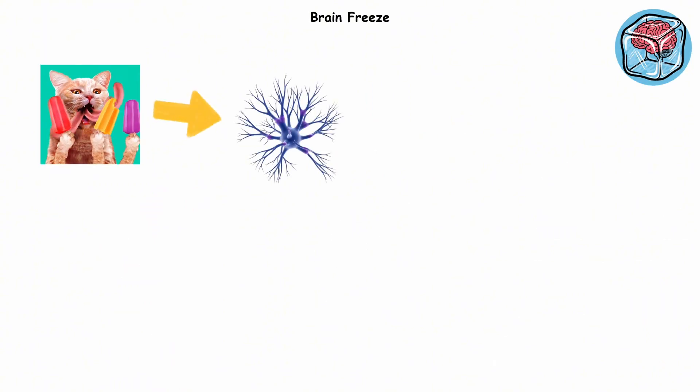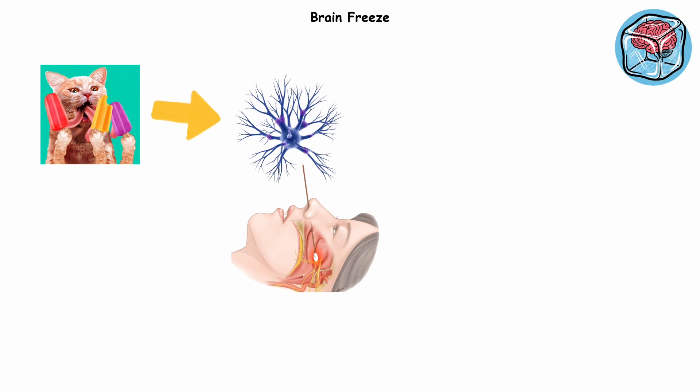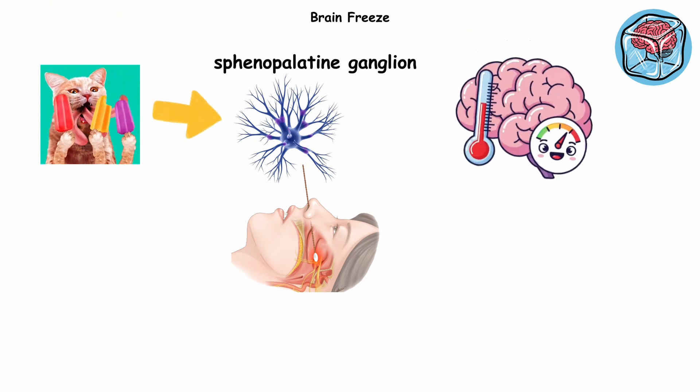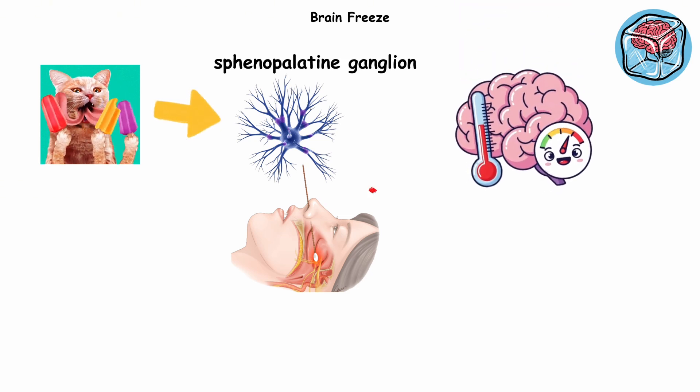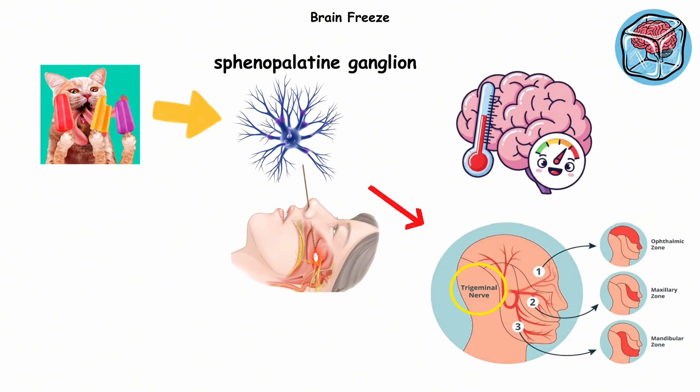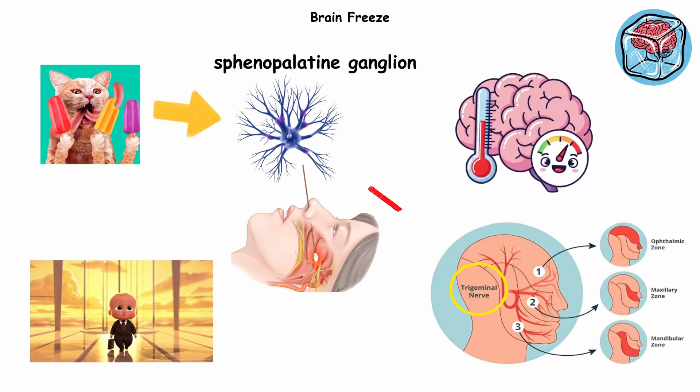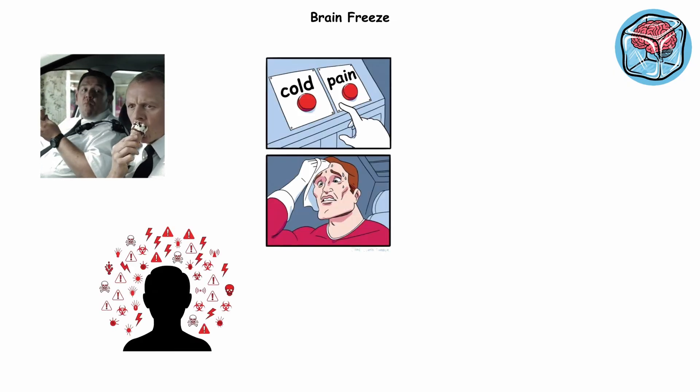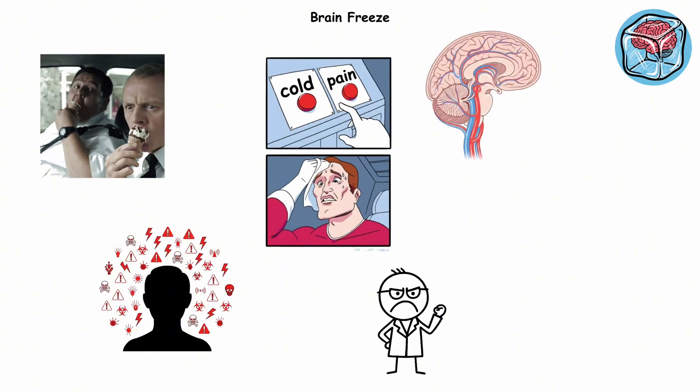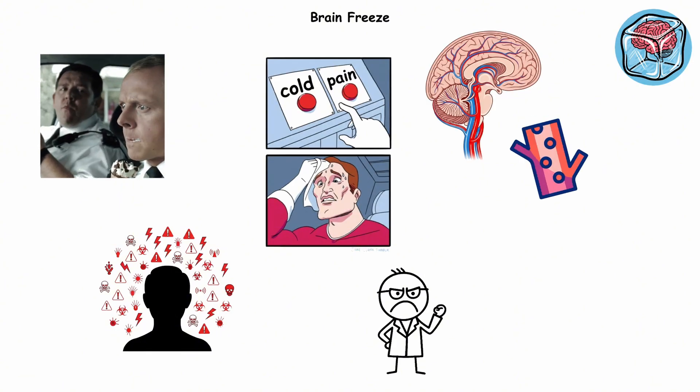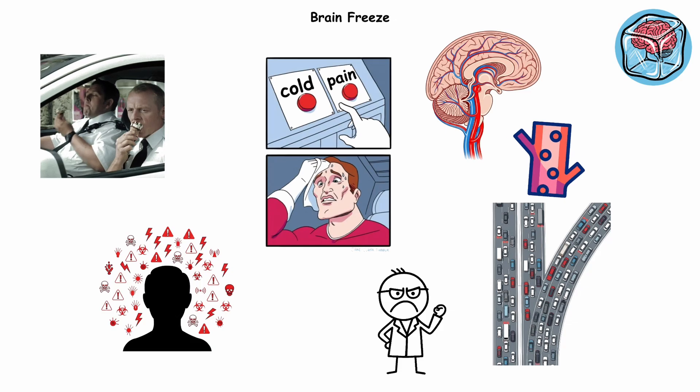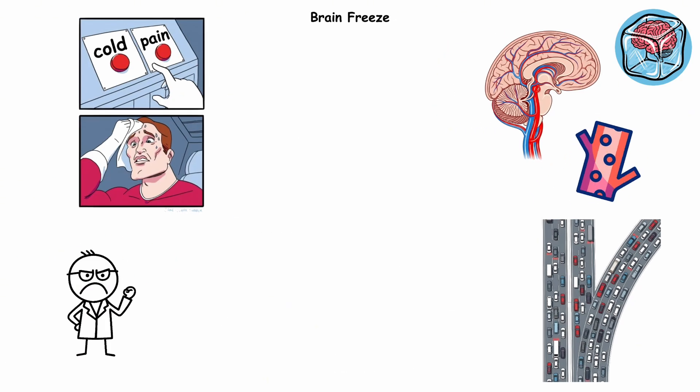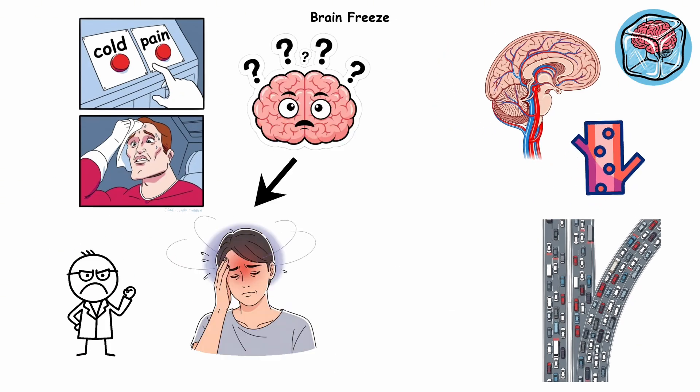When super cold stuff hits the roof of your mouth, it chills a nerve cluster tucked behind your face called the sphenopalatine ganglion. Think of it as the brain's temperature alarm system. This nerve is wired up to the trigeminal nerve, the big boss that monitors temperature and pain across your face. So when that cold blast lands, your brain basically panics. It thinks your entire head is under attack. To fight back, it cranks open blood vessels in your brain to flood the area with warm blood. That sudden traffic jam of blood creates pressure. And your brain, confused as ever, reads that pressure as pain.